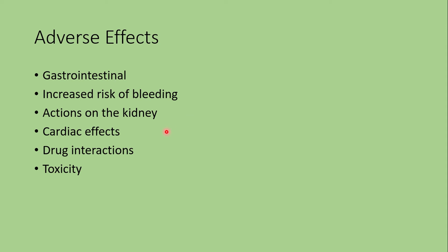Regarding cardiac effects, agents such as aspirin with a very high degree of COX-1 selectivity have shown a cardiovascular protective effect, thought to be due to a reduction in the production of thromboxane A2. Agents with higher relative COX-2 selectivity have been associated with an increased risk for cardiovascular events like myocardial infarction and stroke, possibly by decreasing prostaglandin I2 production mediated by COX-2.